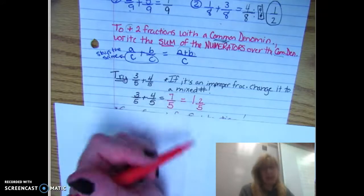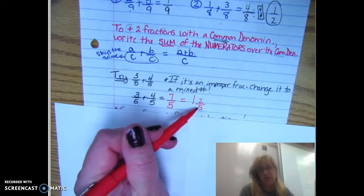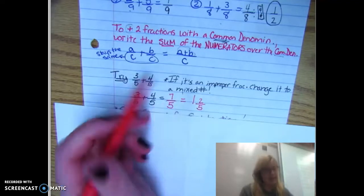So two fifths. So that means I would have more than one candy bar. I would have eaten a whole plus two fifths of another one if I had seven fifths.